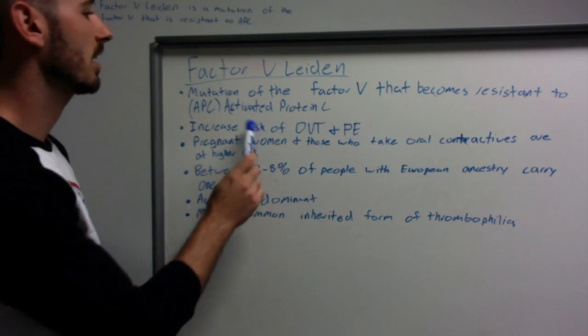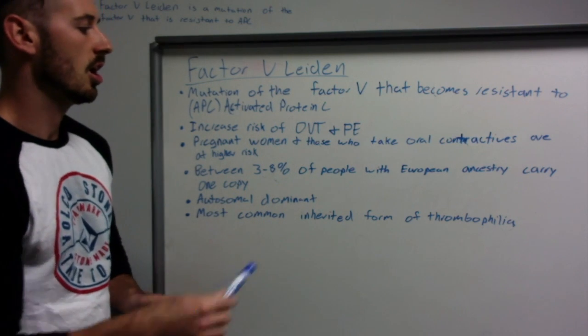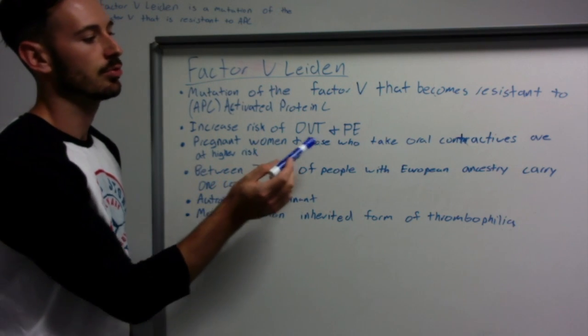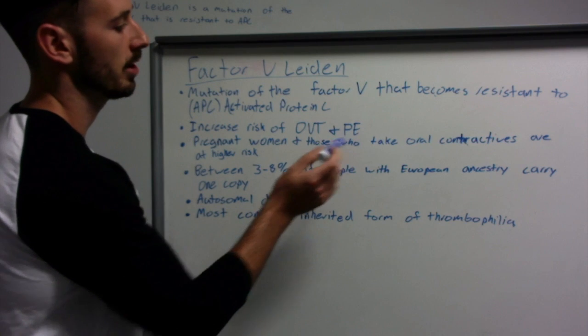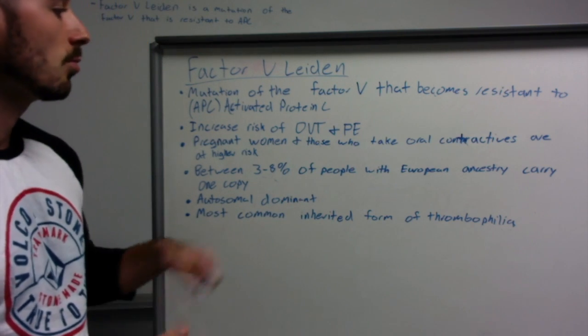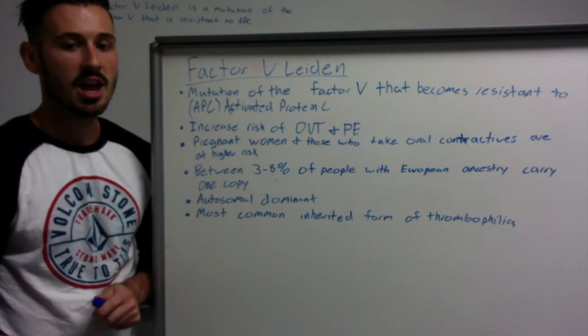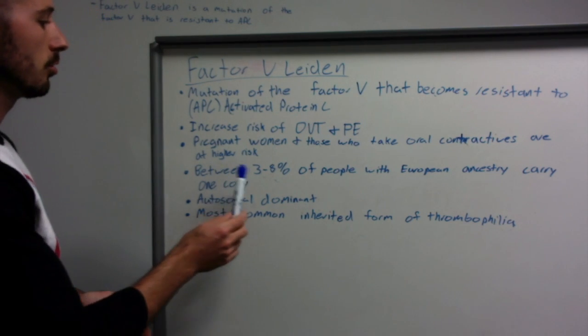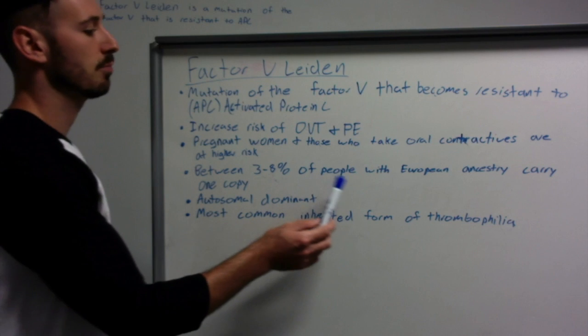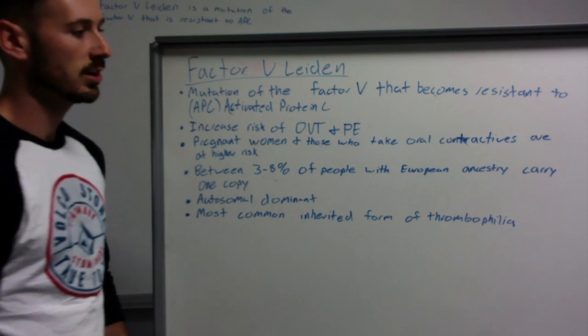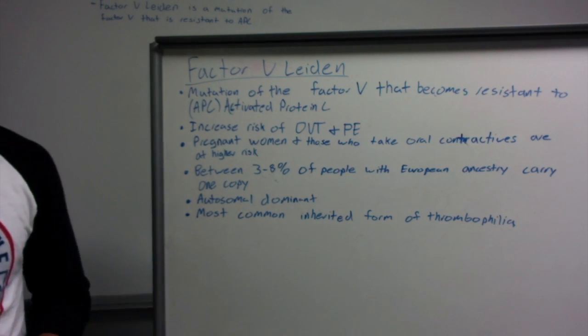makes it resistant to activated protein C. This increases the risk of deep vein thrombosis as well as pulmonary embolism. Pregnant women and those who take oral contraceptives are also at higher risk, and around three to eight percent of people with European ancestry carry at least one copy of this disease.